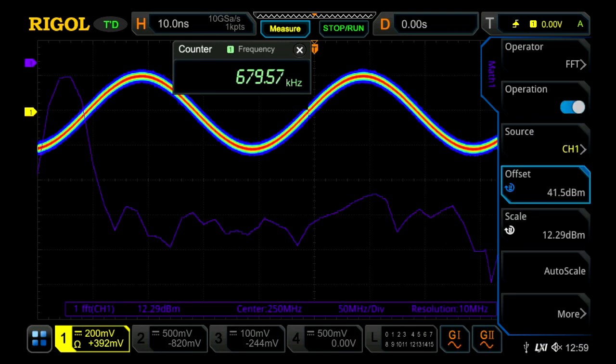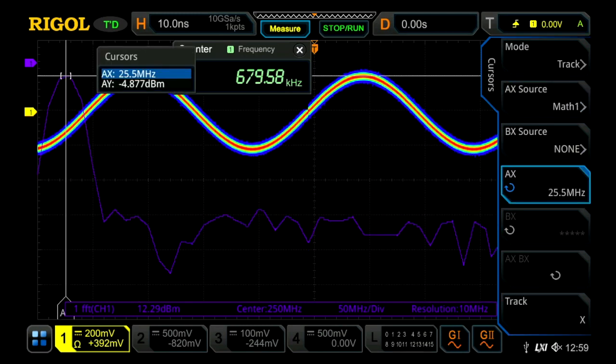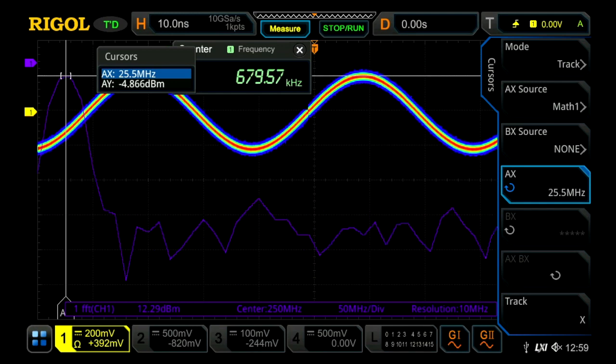So turn on a couple different things here. Now turn on the FFT. We've got the color grade on. Let's turn on a cursor on that FFT as well. So we can see the peak cursor at the 25 MHz of that sine wave.